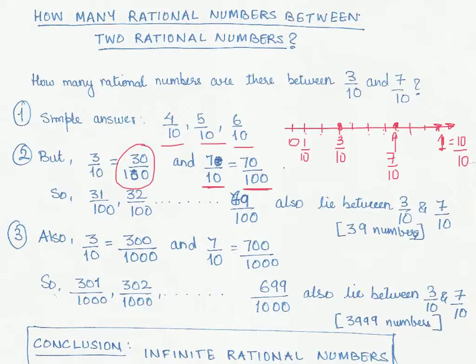If you follow the same logic, you can start with 31 by 100, 32 by 100, and so on all the way you go till 69 by 100.